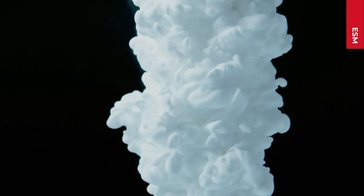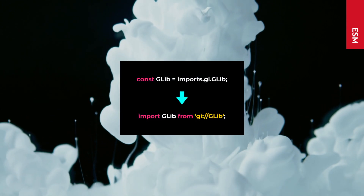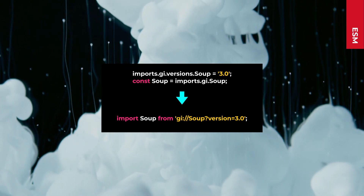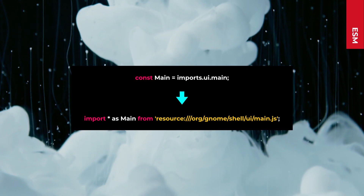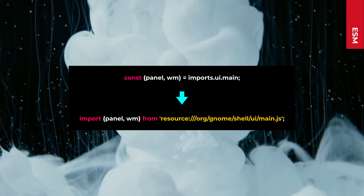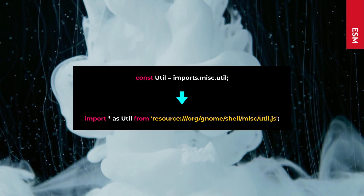GNUPShell 45 moved to ESM, so you should use the standard import instead of old imports. Here we import GLEP with the standard import, and you can specify the version when you need it. We don't have mapping for GNUPShell resources yet, so you have to use the full resource address. Resource address is case sensitive.